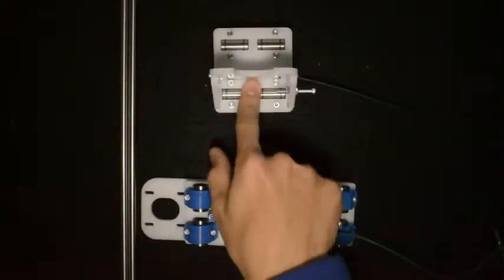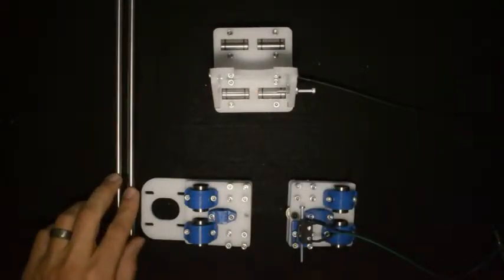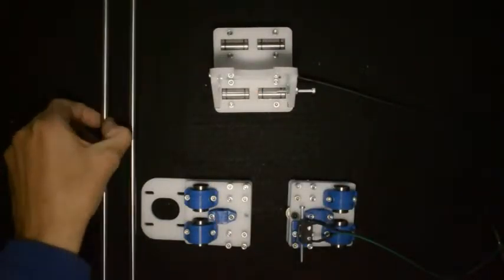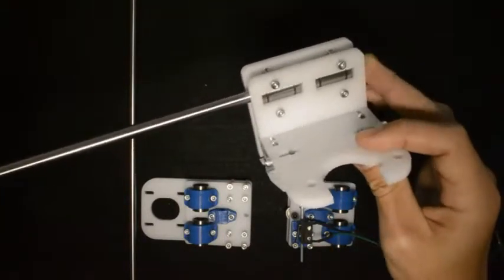For the next step, we'll need the X-carriage that we assembled previously, as well as two linear rods. Firstly, we'll take the rods and assemble them through the linear bearings of the X-carriage.